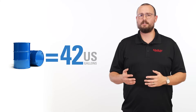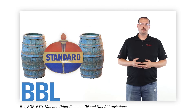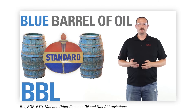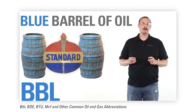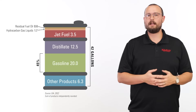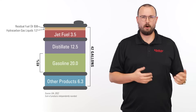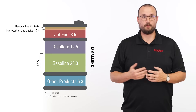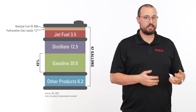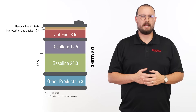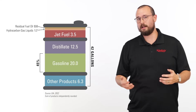So how much oil is used for gasoline? The standard unit of measurement for produced oil is a barrel, or BBL, which amounts to 42 gallons. Of these 42 gallons, 20 gallons are used for gasoline, 12.5 are used for lower octane fuels such as diesel, 3.5 are used for jet fuel, and just under 6.5 are used for various petroleum products.